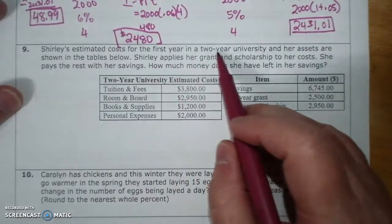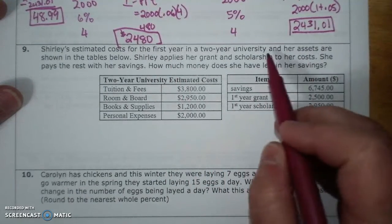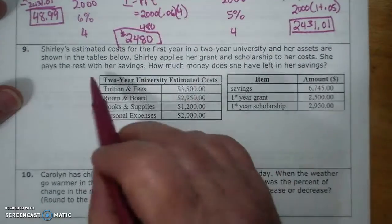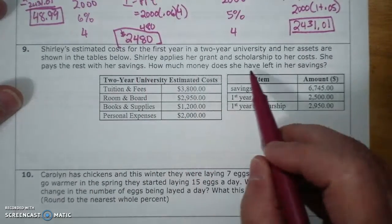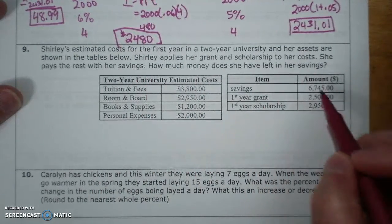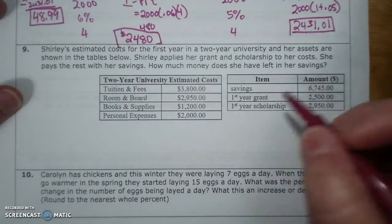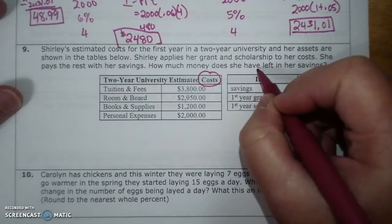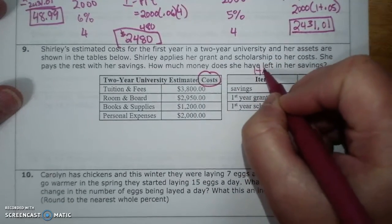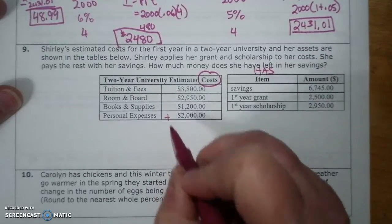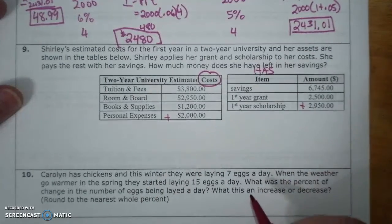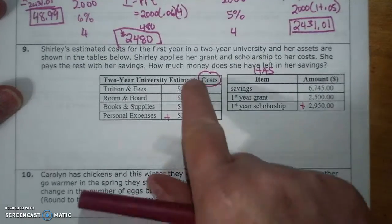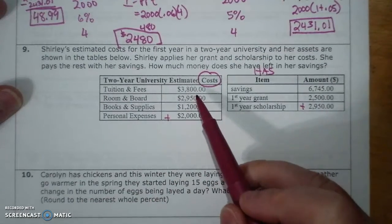Okay, here we go. Shirley's estimated costs for the first two-year university, her assets are shown below. She applies for grants and scholarships, she pays the rest with her savings. How much money does she have left in her savings? So this is costs, this is has. So I'm going to add all that up and find out what the difference is.